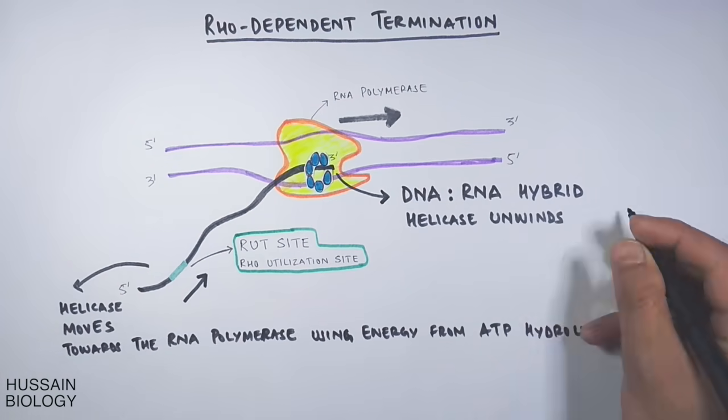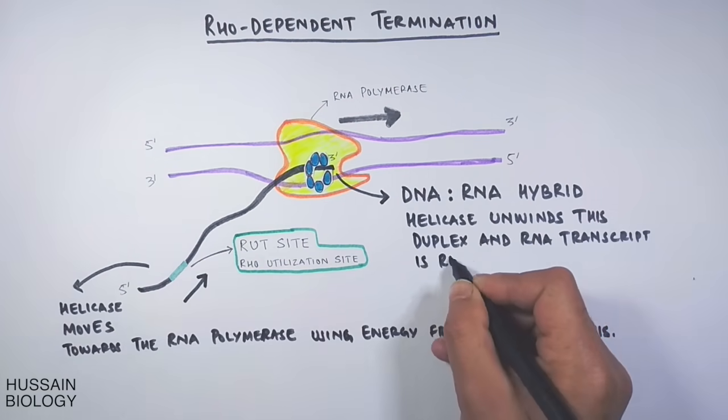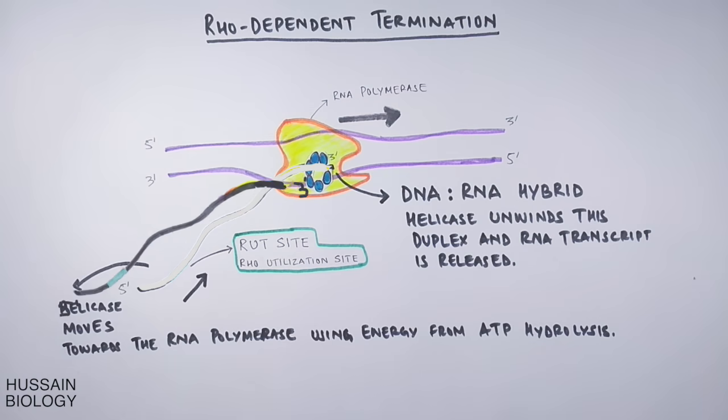And finally, the RNA transcript is released from the complex. This way, rho-dependent termination is driven in E. coli.